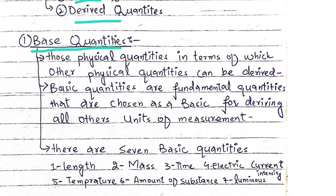Base physical quantities are those quantities in terms of which other physical quantities can be derived. These are the basic quantities from which other physical quantities can be derived. They are also called fundamental quantities — those that are chosen as a base for deriving all other units of measurement.